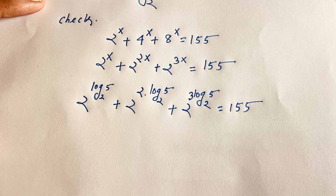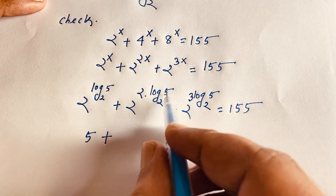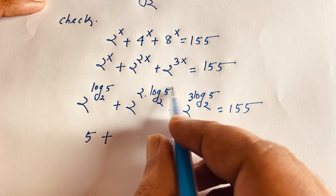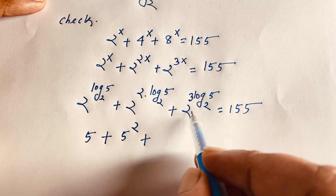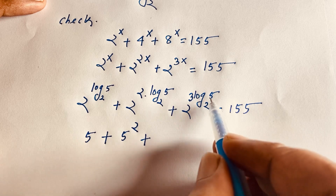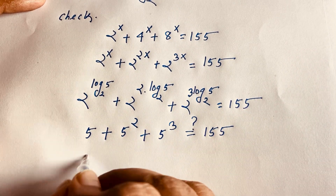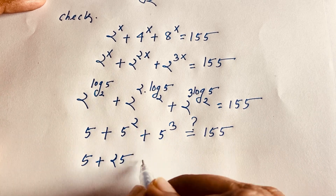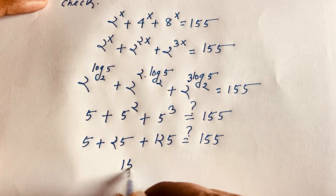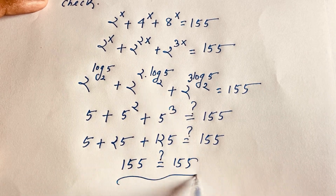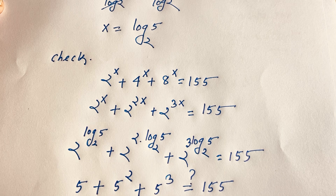Since 2 to the power (log base 2 of 5) equals 5, and 2 to the power (2 log base 2 of 5) equals 5 squared equals 25, and 2 to the power (3 log base 2 of 5) equals 5 cubed equals 125, we get 5 plus 25 plus 125 equals 155. This confirms x equals log base 2 of 5 is our final answer. Thank you all — if you enjoyed this video, please subscribe for more interesting videos. Goodbye!